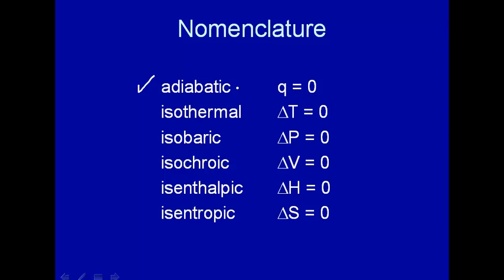Isothermal, as you might expect, means that the change in temperature is zero. Isobaric, bar being a unit of pressure, isobaric means that the change in pressure is zero.